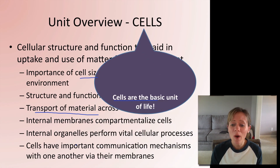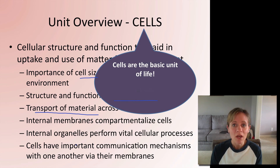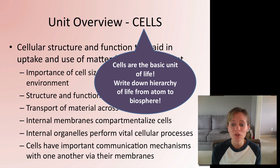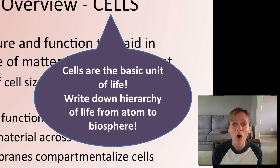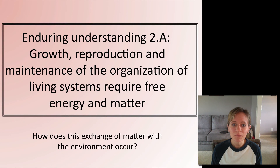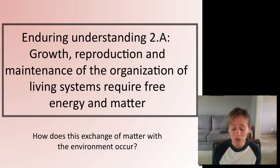So what are cells? Cells are the basic unit of life — what we consider to be alive is a cell. You can be unicellular and be alive. For homework, write down the hierarchy of life all the way from an atom to a biosphere, and think about where cells fit — you should have about seven or eight things. The enduring understanding we'll focus on is that growth, reproduction, and maintenance of living systems require free energy and matter. Now we'll look at how exchange of matter with the environment occurs at the cellular level.